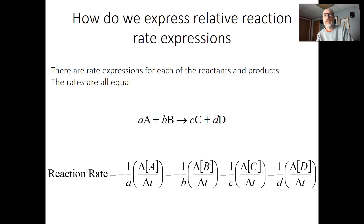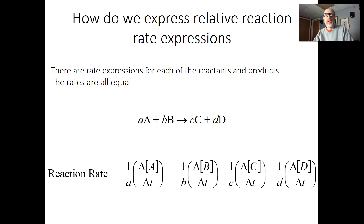The products C and D are appearing, so their reaction rates are going to be positive in this expression. The change in concentration of C over change in time will be multiplied by 1 over small c, where small c is the stoichiometric coefficient in front of C in the balanced chemical equation. For D, it would be the change in concentration of D over the change in time, times 1 over small d, with d again being the stoichiometric coefficient.